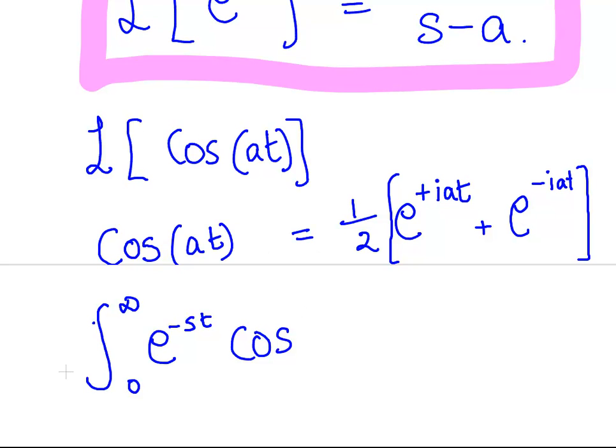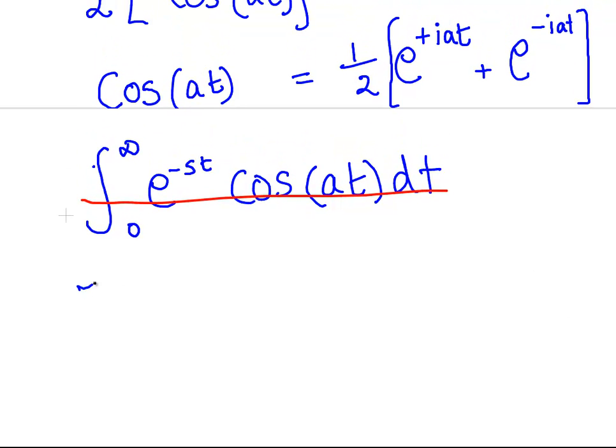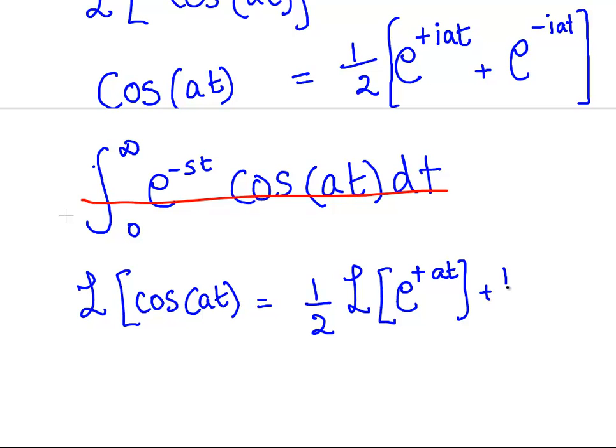We could evaluate that, but I'm saying use the evaluation you've done already, the derivation you've done already. What you could say is the Laplace transform of cos(at) is equal to half the Laplace transform of e^(iat) plus half the Laplace transform of e^(-iat).